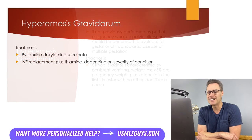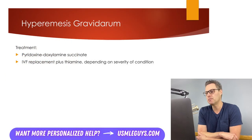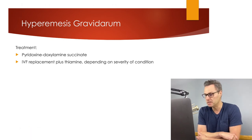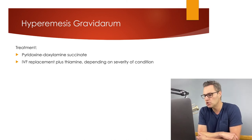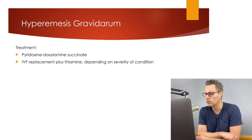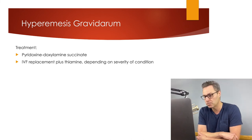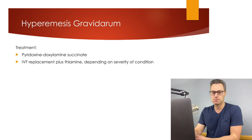Treatment includes trying to eat small bland meals spaced out throughout the day, although this has very limited benefit. The medication pyridoxine-doxylamine succinate is usually warranted. If the patient is significantly dehydrated and unable to replace fluids due to persistent vomiting, we give IV fluid replacement plus thiamine.